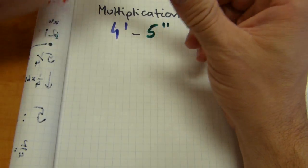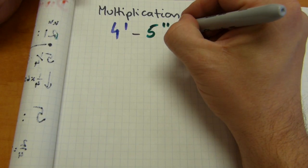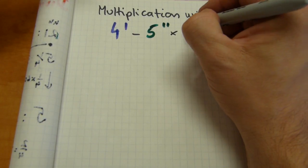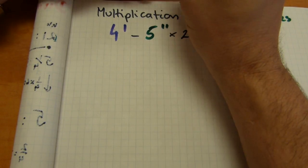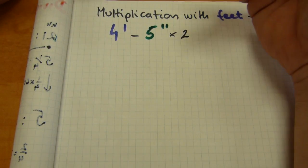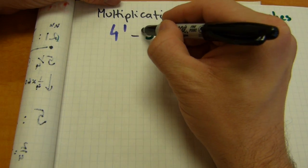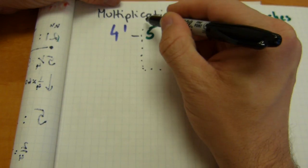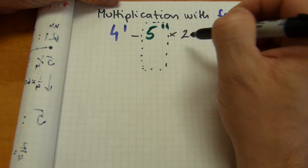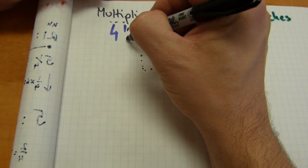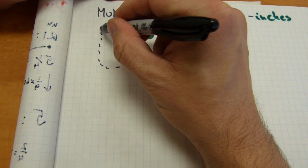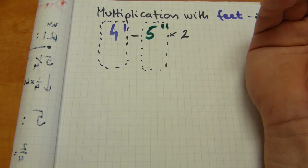So if this measurement, 4 foot 5 inches, is multiplied by an easy number such as 2, this is how it goes. And this pattern applies to the rest of the calculations. This column here will be the inches column, and we're gonna make a total of the inches here. This is gonna be the feet column and we'll make a total for the feet here.